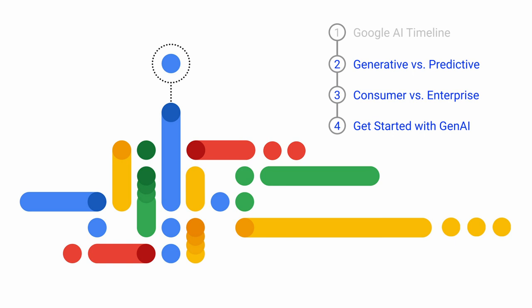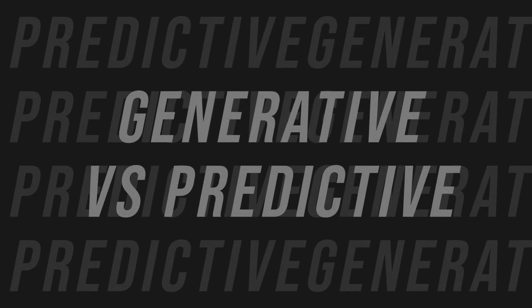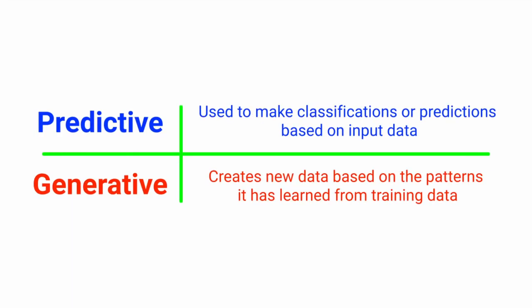Next we'll cover how Generative AI is different from Predictive AI and when you would use one over the other. Predictive AI is used to make classifications or predictions based on input data, whereas Generative AI creates new data based on the patterns it has learned from training data.